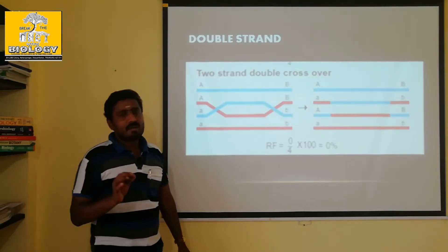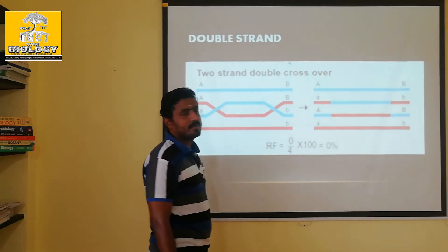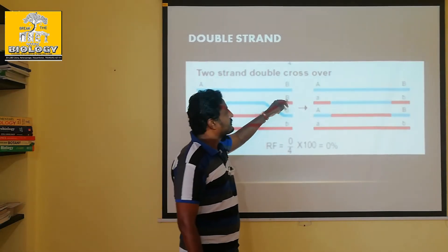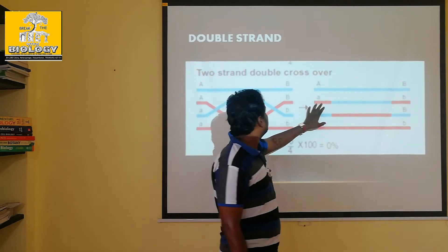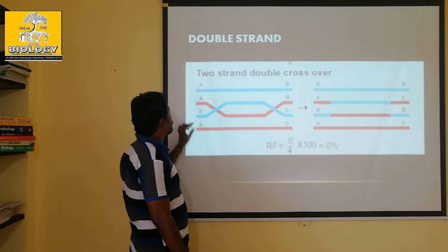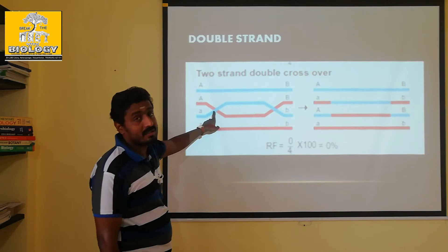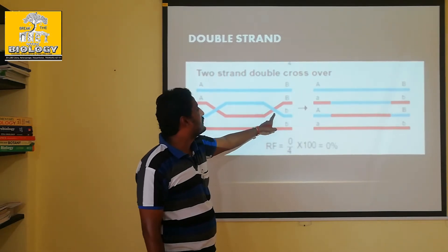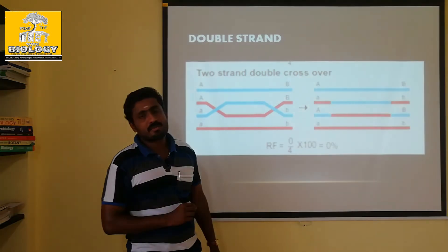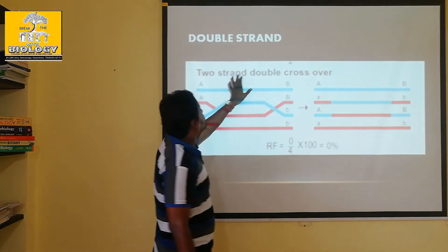This is two strand double crossing over. Two chiasmata are formed. Because of the formation of chiasmata here, another one chiasmata is formed nearby, so that this gene also interchanges with each other due to the crossing over process. Two strand double crossing over.